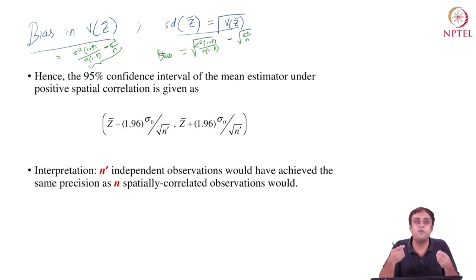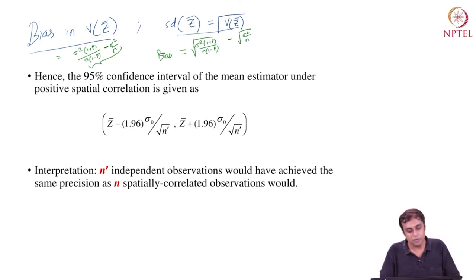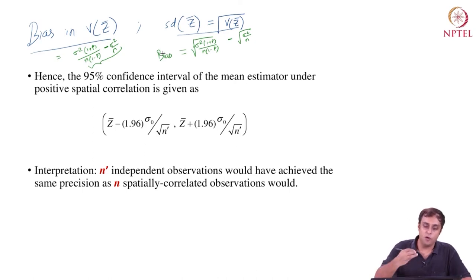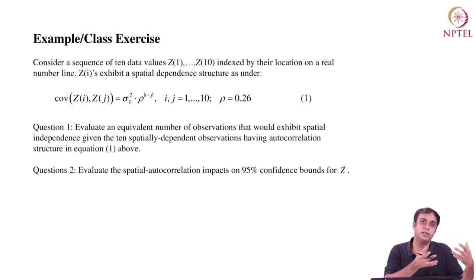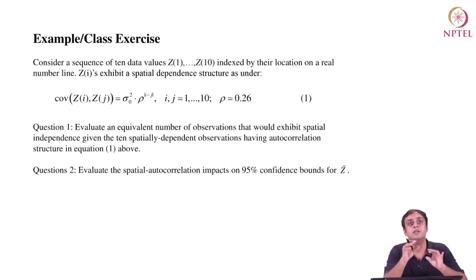As the value of rho increases — as spatial dependence increases — n', the effective size of the data set, becomes smaller and smaller, the variance of Z-bar becomes larger and larger, and hence the confidence interval also becomes larger and larger. You should do a two-minute thought exercise on this before moving forward to understand the concept better.